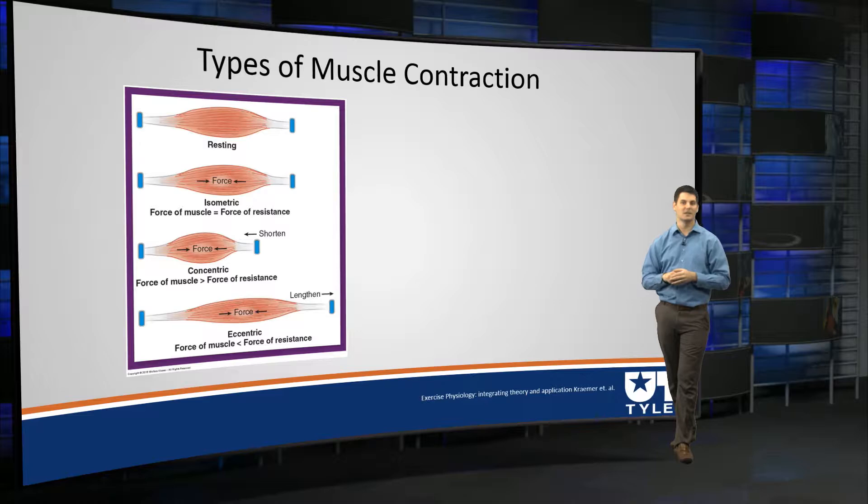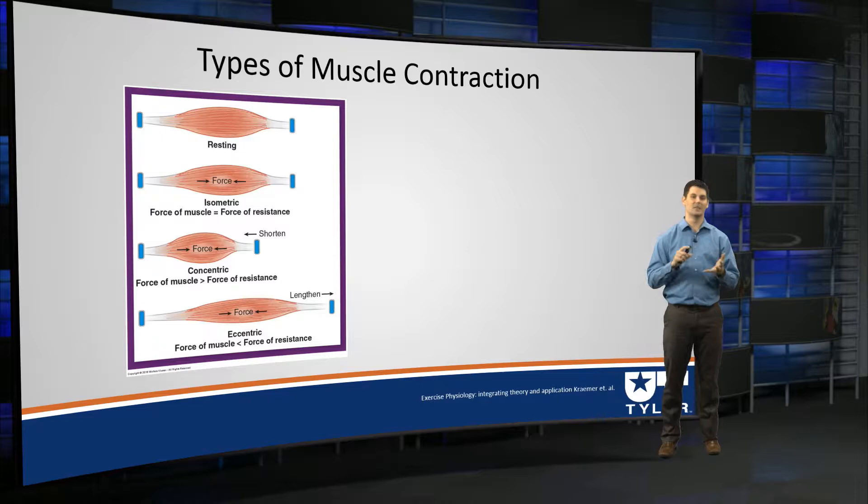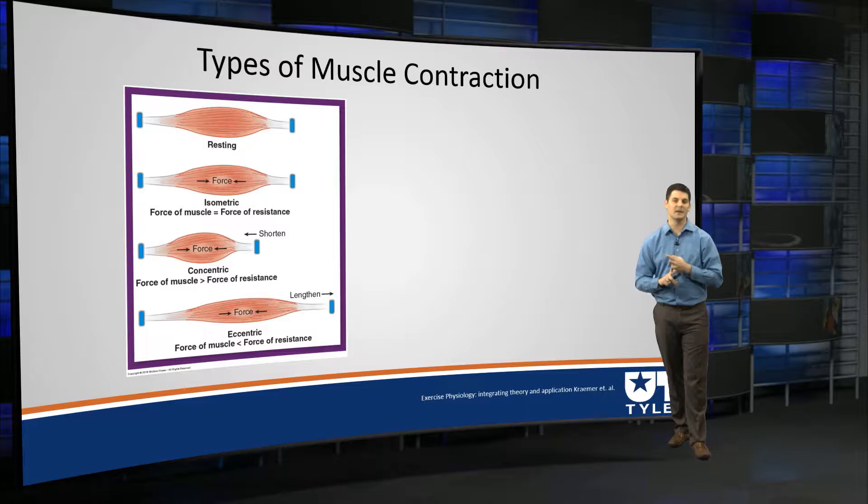In general, we have three types of muscle contractions. Those muscle contractions fit into either an isometric, concentric, or eccentric muscle contraction. Let's break them down individually.